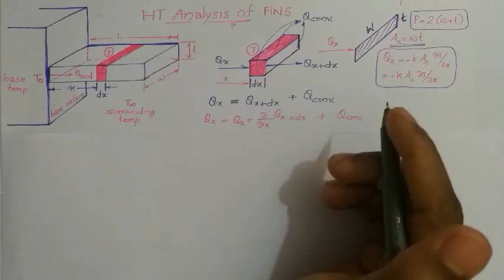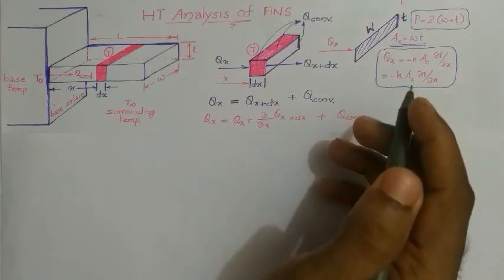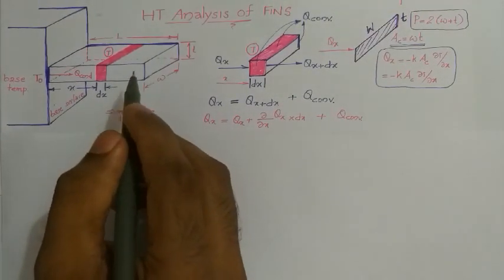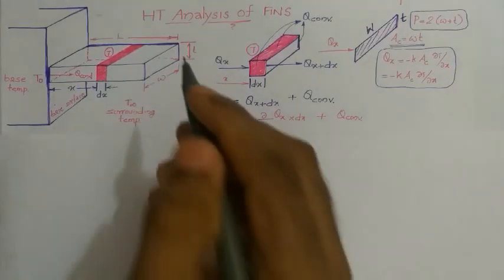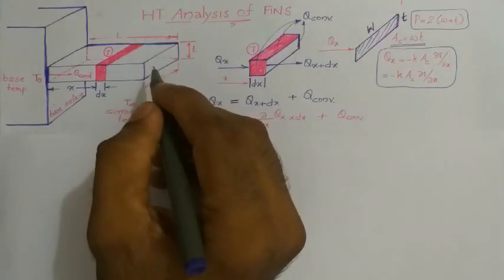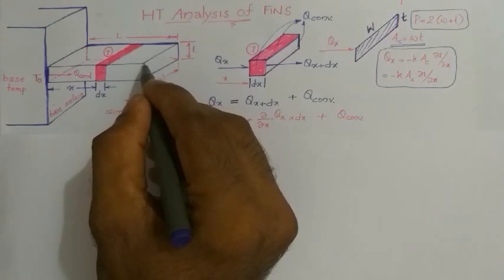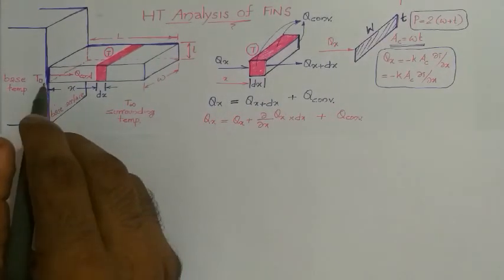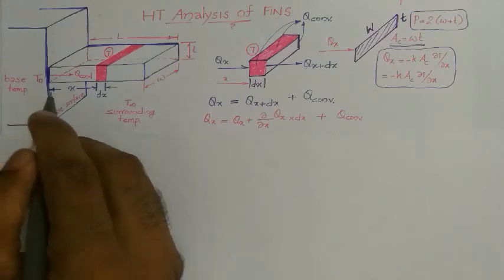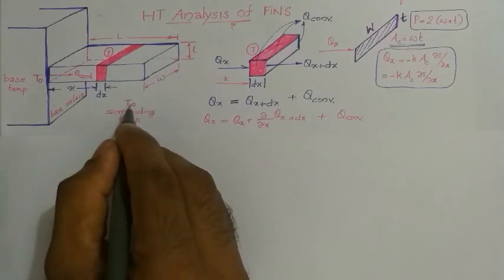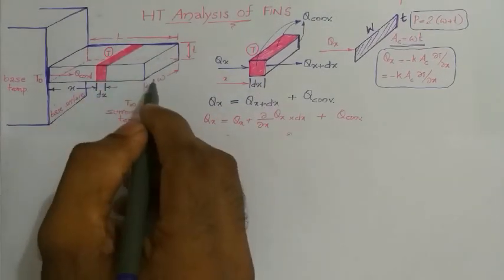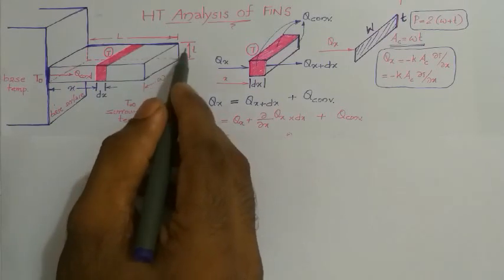In this class we will be studying the heat transfer analysis of fins. In our syllabus we have to study only fins which are having uniform cross-sections. Consider a uniform cross-section rectangular fin which is attached to a base surface maintained at a temperature T-naught (base temperature), with the surroundings maintained at a temperature T-infinity. The fin has a length L and cross-section with dimensions W and T.